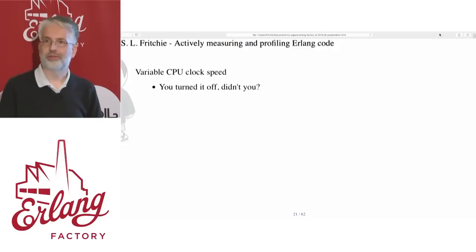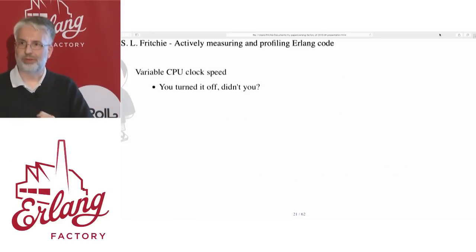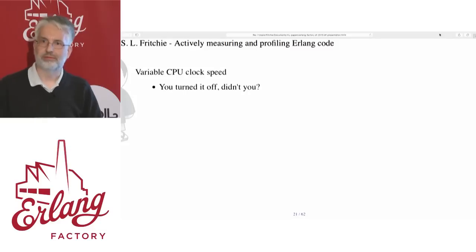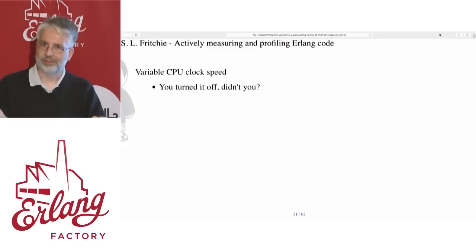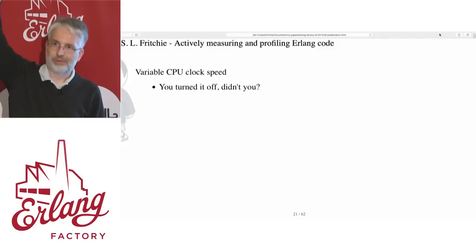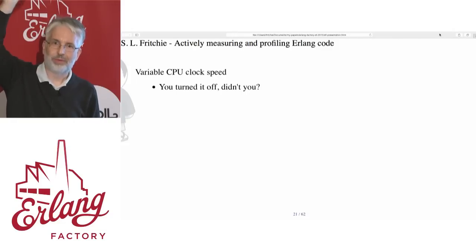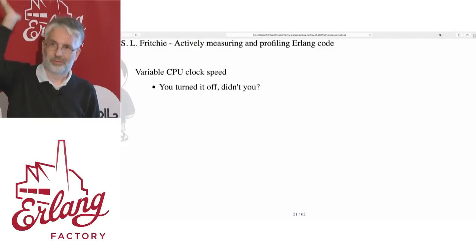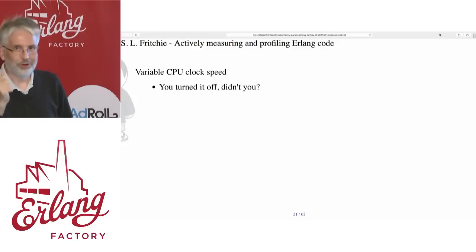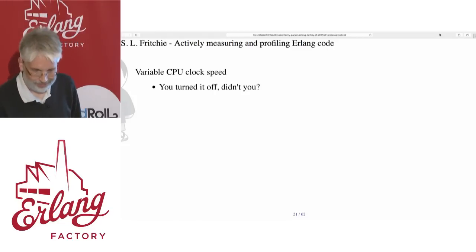You did turn off the variable CPU clock speed feature when you're doing this testing, right? How many people forget to do this when they're benchmarking or profiling their code? Turn it off.